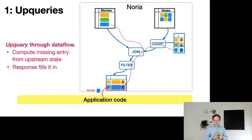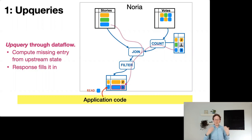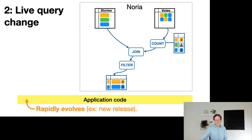When the response arrives at the materialized view at the bottom of the data flow graph, it fills in the missing absent entry. Now NARIA can respond to the application that the blue story has three votes.